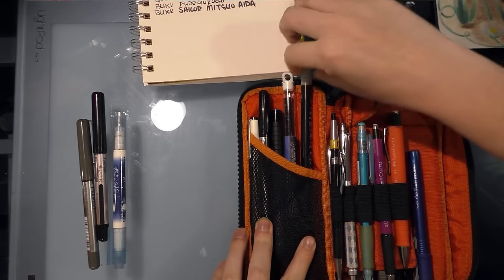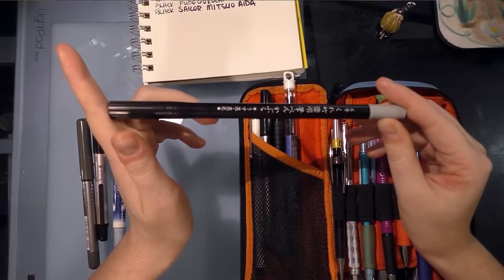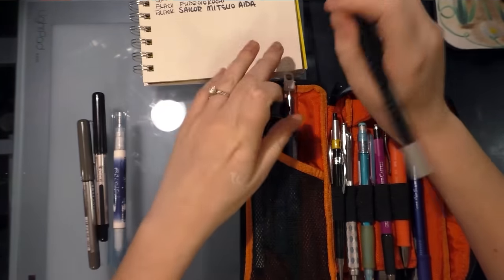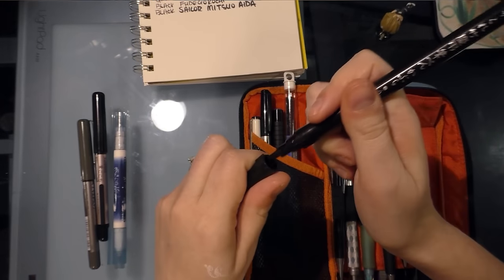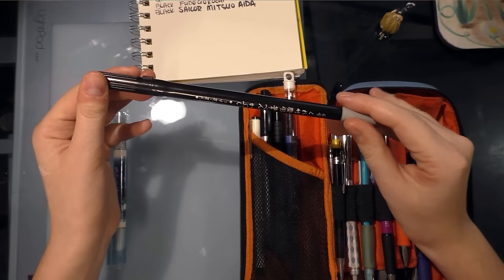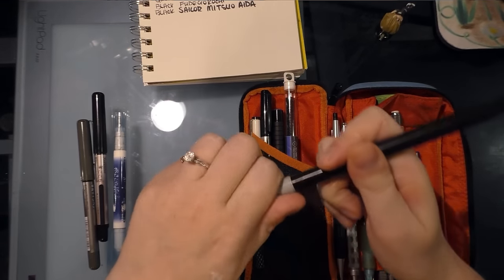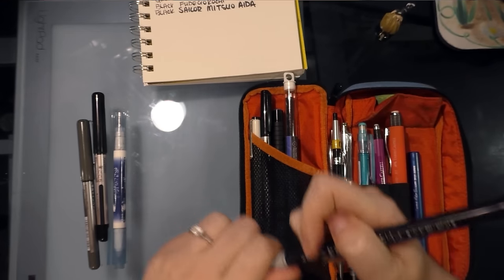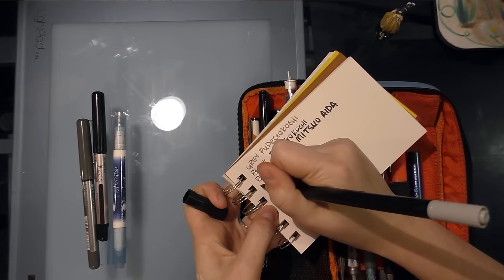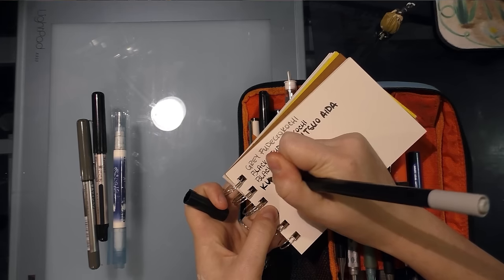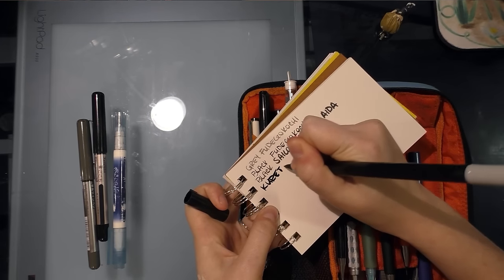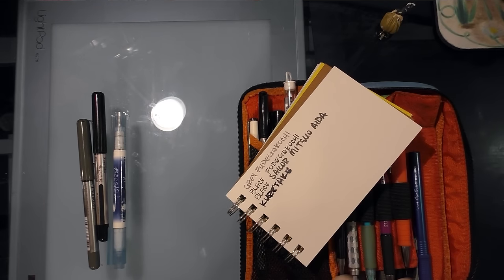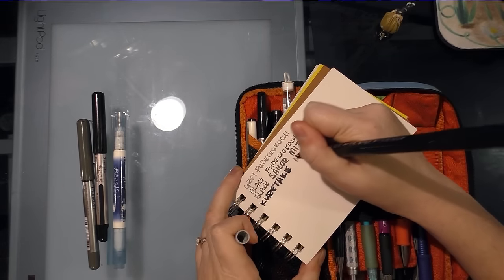Now right now I also have a Kuretake number six. Kuretake number six has one black large brush, sort of like the art and graphic twin. Actually the bodies are pretty much identical except for the writing. Then the other side has an almost as large gray tip. And this is great for fills, it's also great for larger things, it's great for doing two-tone illustrations.